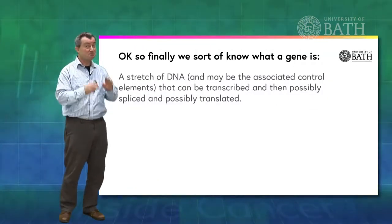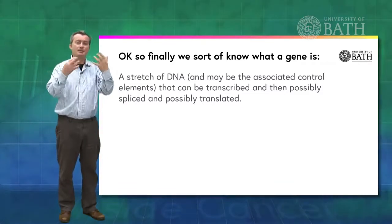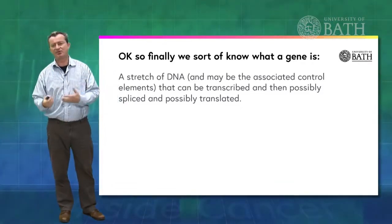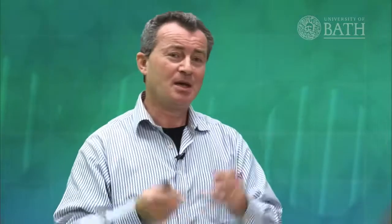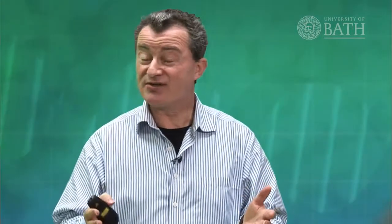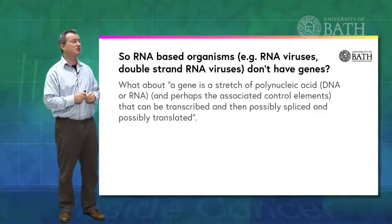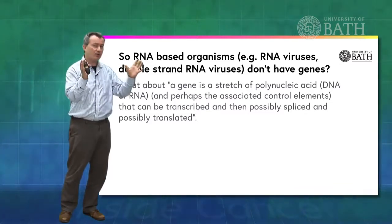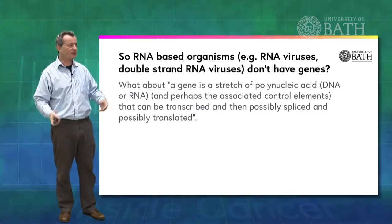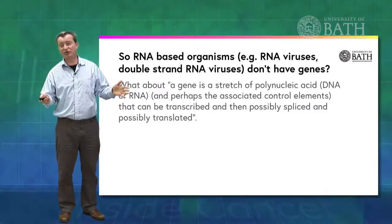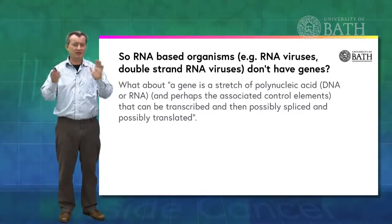Nonetheless, leaving these issues aside, we can get a rough, goodish definition of what a gene must be. A gene is a stretch of DNA, maybe with the associated close control elements, maybe the promoters. But the gene can be transcribed, possibly spliced, and possibly translated. That sort of does us. But virologists in the audience will know we have a problem already — because there are a lot of viruses that don't use DNA as their inherited material. They use RNAs, sometimes single-stranded, sometimes double-stranded. They function just like anything else; those RNAs encode the information for proteins and so on. So let's go again: what about a gene as a stretch of polynucleic acid — that could be DNA or RNA — perhaps with the associated control elements, where we get something that's transcribed, maybe spliced, maybe translated?